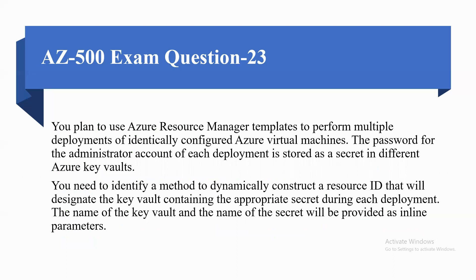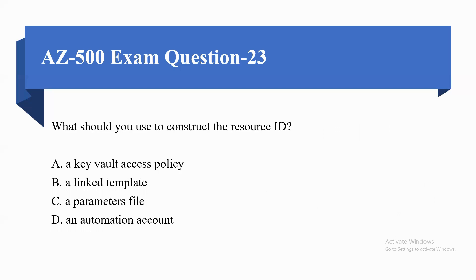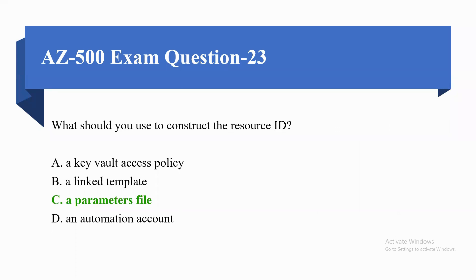Coming to the next question. You plan to use an Azure Resource Manager template to perform multiple deployments of identically configured Azure virtual machines. The password for the administrator account of each deployment is stored as a secret in a different Azure Key Vault. You need to identify a method to dynamically construct a resource ID that will designate the Key Vault containing the appropriate secret during each deployment. The name of the Key Vault and the name of the secret will be provided as inline parameters. What should you use to construct a resource ID? The correct option is a parameters file.